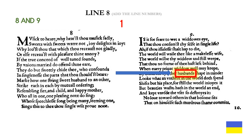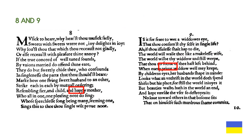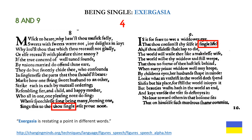Our second clue is women's roles — an example of merismos. Merismos is where something is described or referenced in its entirety. In Renaissance and medieval times, a woman could be a mother, a wife, and a widow. Child and children's — again with an apostrophe s in the proper grammatical way — is another example of polyptoton. The theme of being single is an example of exergesia, which is restating a point in different words. Thou single from line 14 in sonnet eight is a direct reference to single life in sonnet nine.